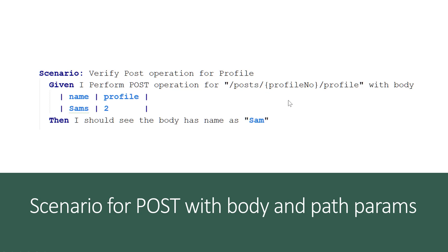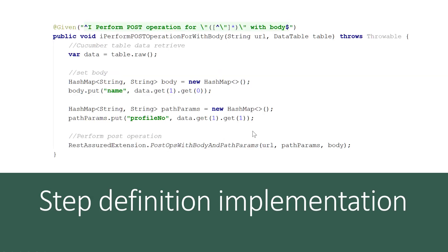The profile number is the key and the value replacing it will come from the data table. We have to handle this substitution in the step definition. The URL uses a path parameter, and the body will have name as 'Sam's'. We then verify the body name has the value 'Sam' - not 'Sam's' - making this a negative scenario where the test is expected to fail.